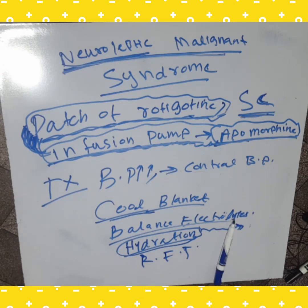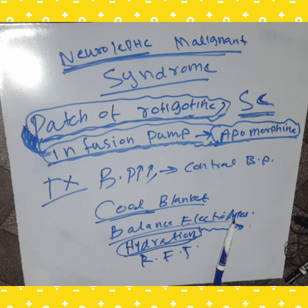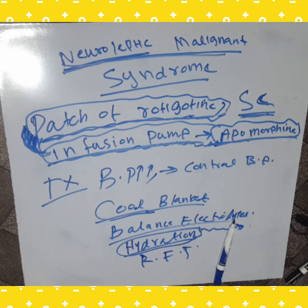So this is the Neuroleptic Malignant Syndrome. It is caused by subacute muscle rigidity, elevated temperature, altered mental status, hyperthermia, tachycardia, increased BP, renal failure, and elevated CK. This is due to the neuroleptic agents — the neuroleptic drugs. Thank you very much!